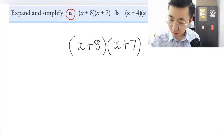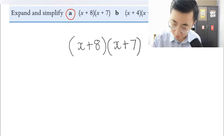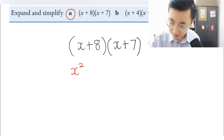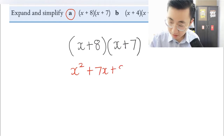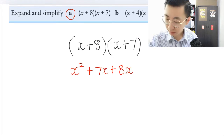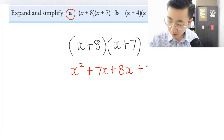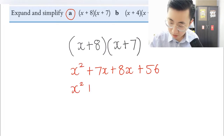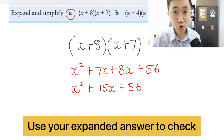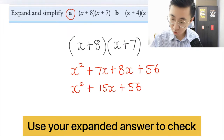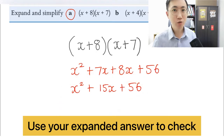So here we go. x times x will give me x squared. Outside is 7x. Inside will be 8x. Finally, number times number, that will be 56. Don't forget to simplify the middle part — that will give you the answer x squared plus 15x plus 56. So I have a question for you. Do you know that we can actually check the answer after our expansion of double brackets? Let me show you how today.